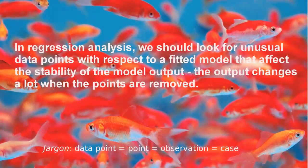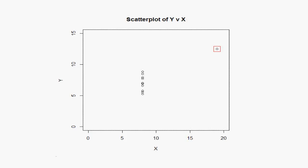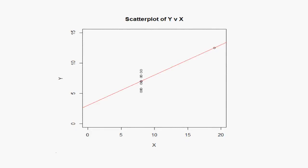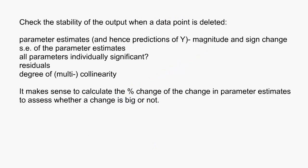When we've fitted a regression, we should look for any unusual data points that affect the stability of the model output. Look at this plot. All except one x take the same value 8. There is one isolated x to the right. If we regress y on x, the fitted line looks like this. Think about what would happen if the point on the right is deleted — would the line still be positively sloped? No, it wouldn't. With the point deleted, there is no correlation between y and x. That one point has a disproportionately big impact on the regression line. It's what is known as an influential point or case observation.